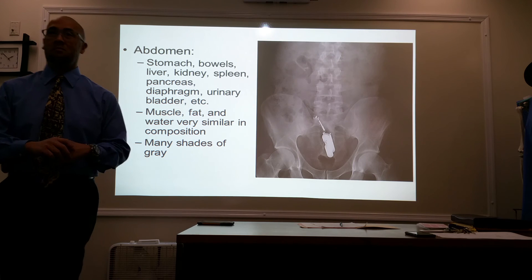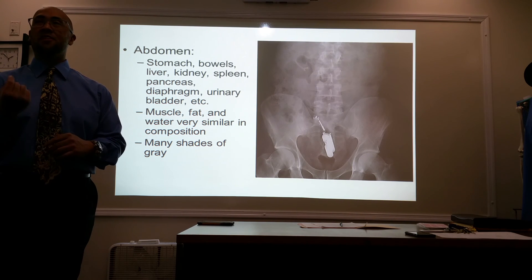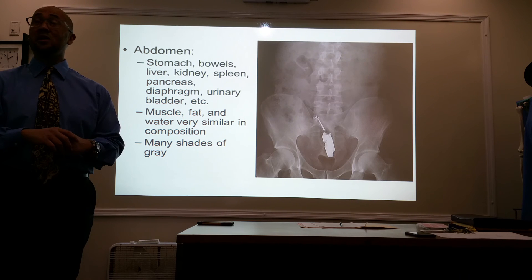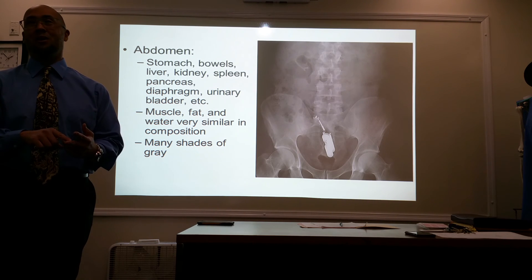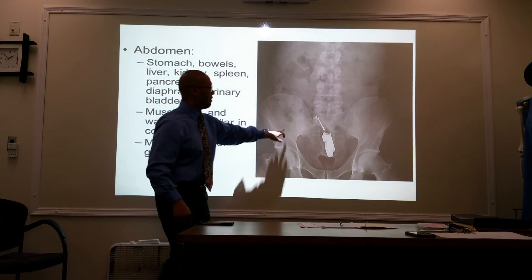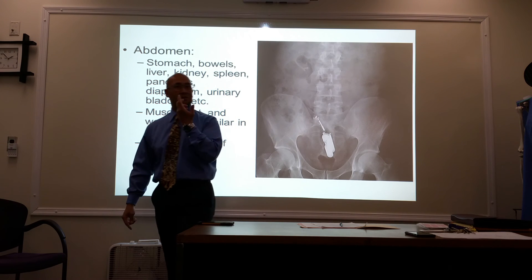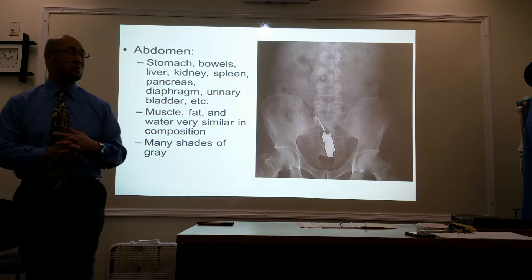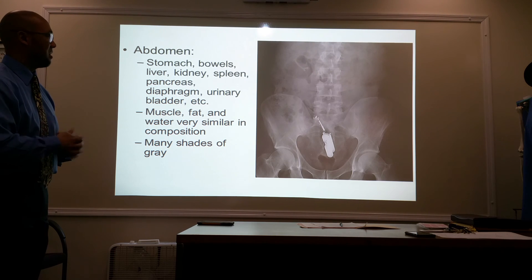Anything that appears white is going to be solid — very thick. It can either be metal or bone. This is bone because we're looking at the pelvis here, but look how much whiter it is over here. Something metallic is going on in there. Or it could be that this piece is a lot thicker than it should be, also causing it to appear white.